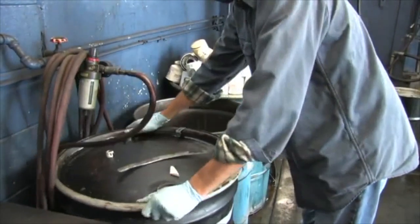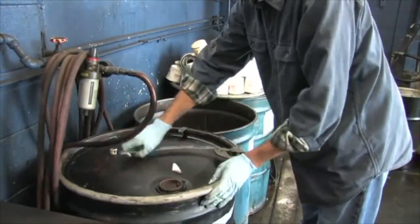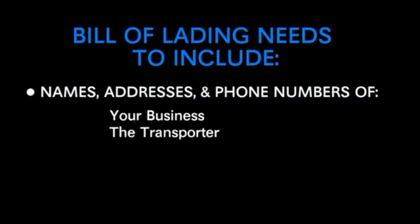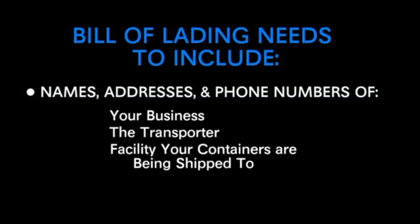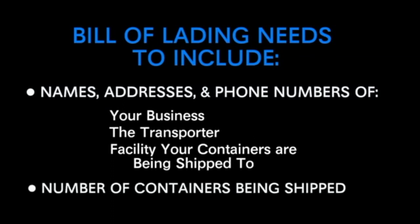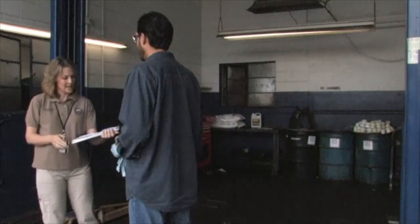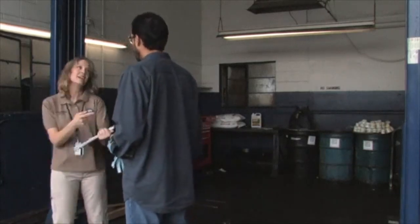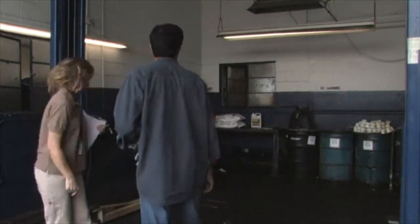And hauled under a bill of lading. The bill of lading needs to include the names, addresses, and phone numbers of your business, the transporter, and the facility your containers are being shipped to, as well as the number of containers being shipped and the date of shipment.